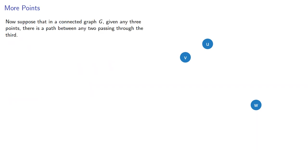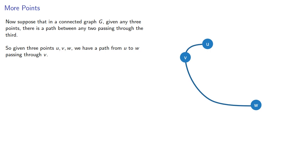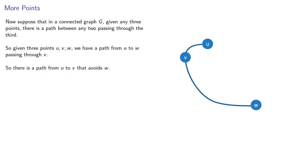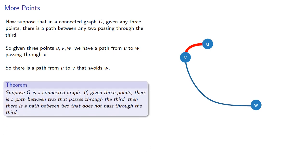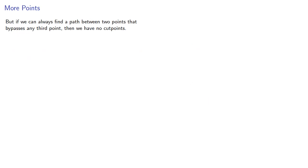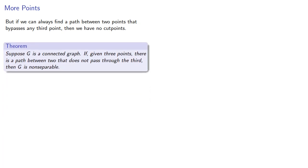Now suppose that in a connected graph g, given any three points, there is a path between any two passing through the third. So given three points u, v, and w, we have a path from u to w passing through v — so there's also a path from u to v that avoids w. In a connected graph, if given any three points there is a path between two that passes through the third, then there is a path between two that does not pass through the third. But if we can always find a path between two points that bypasses any third point, then we have no cut points. And so this takes us home: suppose g is a connected graph — if given three points there is a path between two that does not pass through the third, then g is non-separable.